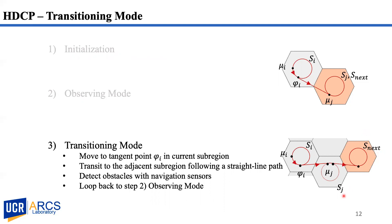This feasible path is determined using the A-star algorithm. Hence, S-next is always adjacent to SI. Starting from position mu in SI, the robot moves to a position phi. This position phi is a tangent point between the circular path in the current subregion SI and the next subregion S-next. Then the robot follows the tangent line to move to S-next. This step continues until it reaches the selected goal subregion. The navigation sensor collects information continuously during both modes to update the environment map. The planned path is smooth, allowing robots to follow at constant velocity.